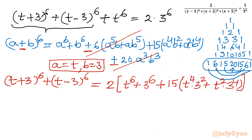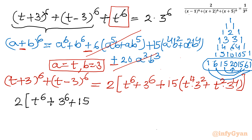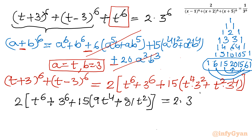Now what is left is this t⁶ which is on the LHS. So let us add the LHS terms: 2 times [t⁶ plus 3⁶ plus 15 times (9t⁴ plus 81t²)], and we still have that additional t⁶ to add. Combining t⁶ with the 2t⁶ inside gives us 3t⁶ total. So I can write the equation as: 3t⁶ plus 2 times 3⁶ [inside a bracket: 3t⁶ plus 81t²]. The right hand side is 2 times 3 raised to the power 6.